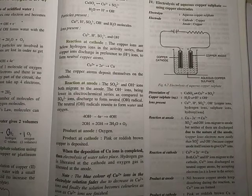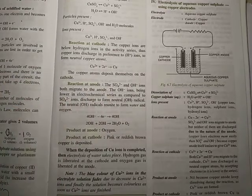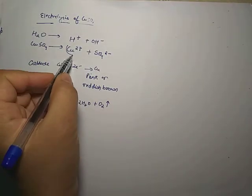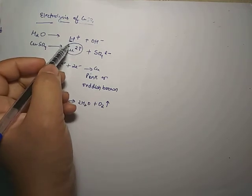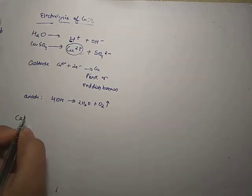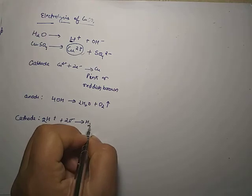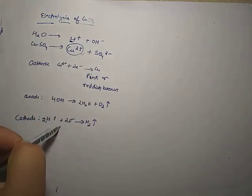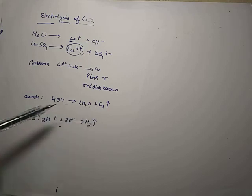Once all the copper has deposited at the cathode, the electrolysis of water will take place. After that, hydrogen gas deposition starts. The cathode reaction then becomes: 2H⁺ + 2e⁻ → H₂ gas. So in the case of copper sulfate, after some time hydrogen gas will be released at the cathode and oxygen gas at the anode.